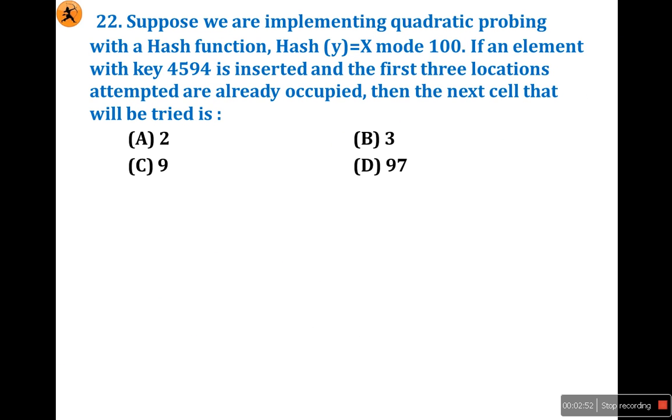Next question is 22. It's somewhat lengthier but very simple if you know how to solve. Suppose we are implementing quadratic probing with the hash function Hash(y) = x mod 100. If an element with key 4594 is inserted and the first 3 locations attempted are already occupied, then the next cell that will be tried is...